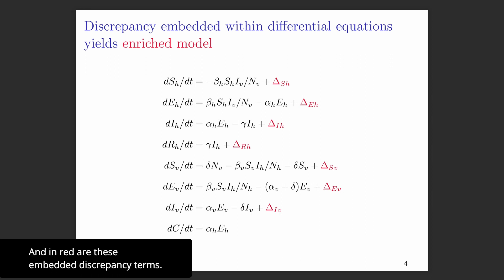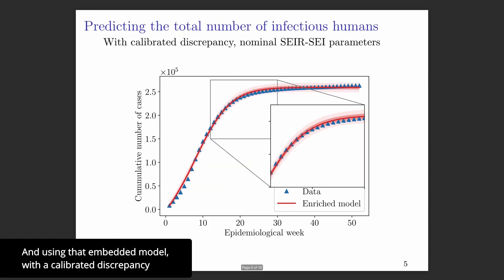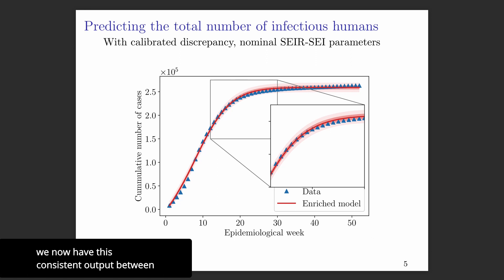And in red are these embedded discrepancy terms. Using that embedded model with the calibrated discrepancy terms and nominal parameters of the original model, we now have consistent output between the model and the data. So that's great.